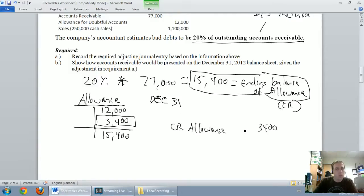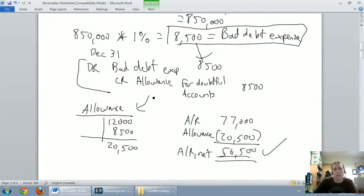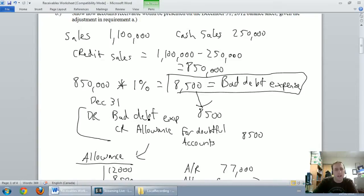Now, what's the related debit here? Well, let's go back up and look at what we did when we did the income statement method. We went debit bad debt expense, credit allowance for doubtful accounts. Same thing here.